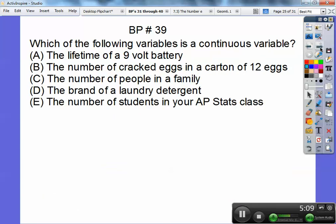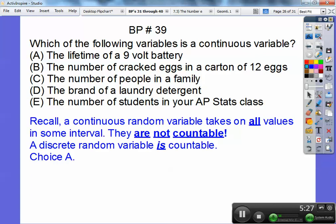Which of the following variables is a continuous variable? A continuous variable is a non-counting. You can't count it. So I can count the cracked number of eggs. I can count the number of people in the family. I can count the brand of laundry detergent. The ones I can't count is the lifetime of a 9-volt battery. So recall the ones that are not countable. So it's choice A.